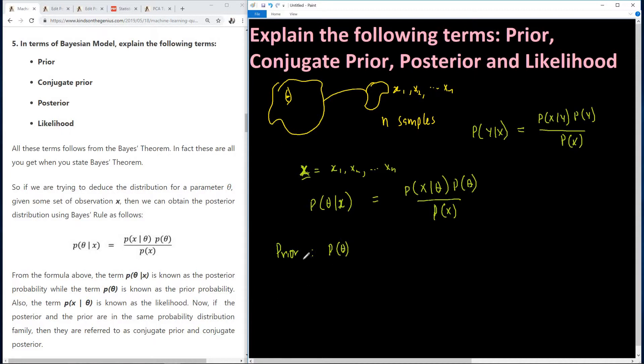So this is the probability of the parameter before actually taking the observation or taking the samples. So this is the probability of the unknown parameter before taking any observation or before making any observation.